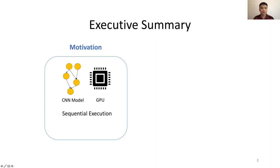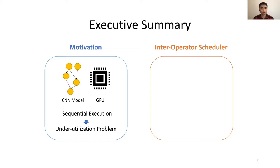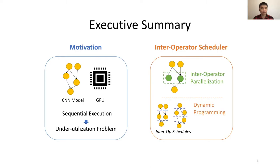Our work starts from observing that the sequential execution widely adopted by deep learning frameworks underutilizes the hardware. In this work, we propose the Interoperator Scheduler that uses interoperator parallelization to improve device utilization and accelerate CNN execution. Inside iOS, we employ a dynamic programming algorithm to explore the schedule space exhaustively and find the optimal schedule. iOS achieves 1.1 to 1.5 times speedup comparing to state-of-the-art libraries.